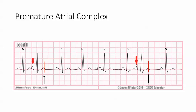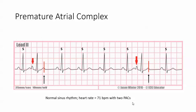If you measure the distance between this R wave and this R wave, there are 21 small squares. 21 goes into 1,500, so the rate is 71 beats per minute. The way you would report this is: normal sinus rhythm with a heart rate of 71 beats per minute with two PACs.